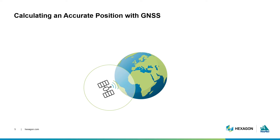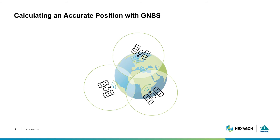As we track more satellites, more spheres of where we could be are established. Our position is where all the spheres intersect at a common point. It takes at least four spheres to intersect at one common point — just hard to visualize that on a two-dimensional slide. This is the process of how we take that equation, determine our pseudo range to satellites, and apply it in finding our position. But first, let's dig deeper.